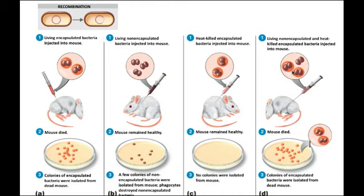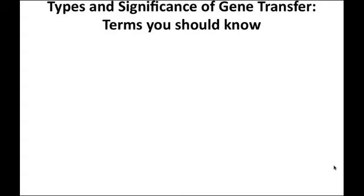Then came the key experiment: he mixed the heat-killed encapsulated bacteria with the live non-virulent form and injected it into a mouse. The mouse died. When he re-isolated the microorganisms, he found the virulent type — even though the virulent cells had been heat-killed. How did the virulent form seemingly come back? It was actually a gene transfer event.